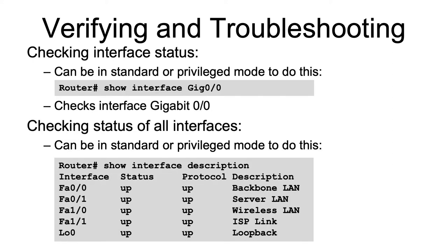You can also check the interface status. You need to be in standard or privileged mode to do this, and you can do that by simply typing 'show interface gig 0/0'. This checks the interface status of GigabitEthernet 0/0.